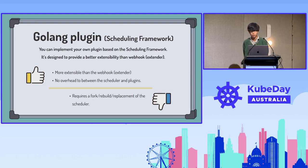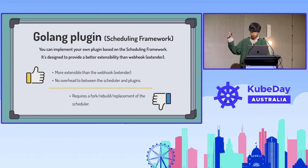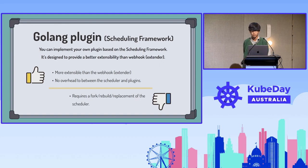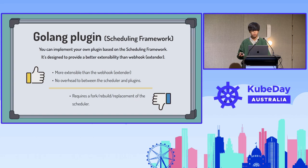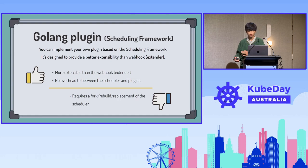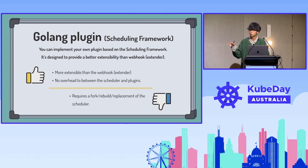But Golang plugins also have a downside of troublesomeness — they don't support dynamic loading of plugins. When you want to use it, you have to fork the scheduler, integrate your plugin into it, rebuild it, and replace the existing scheduler with your new one. That's kind of troublesome to set up.